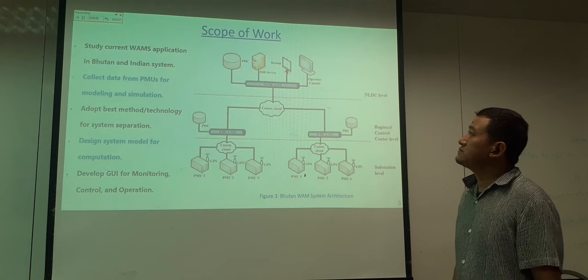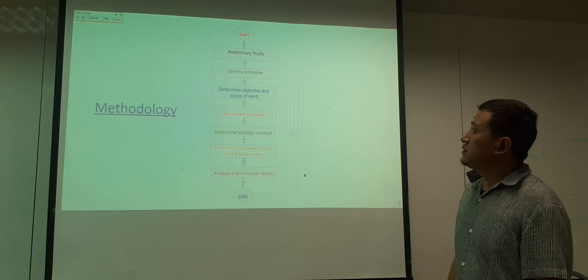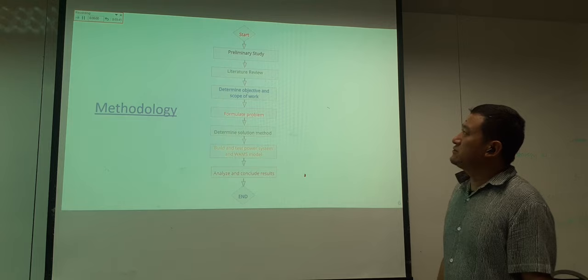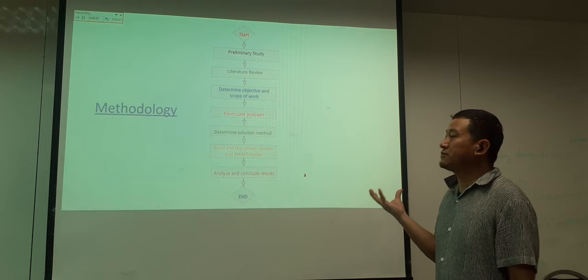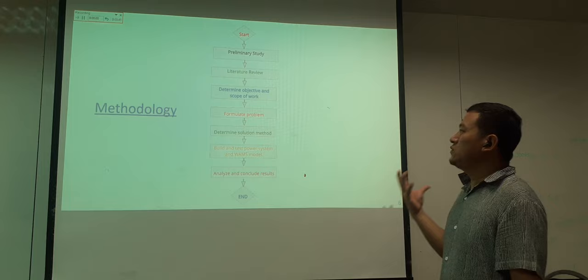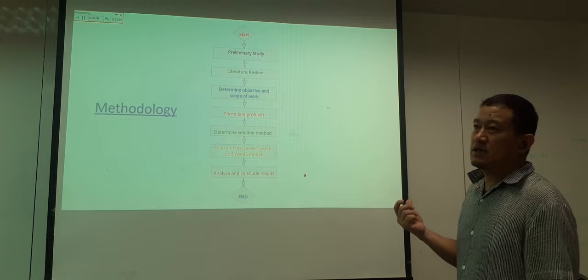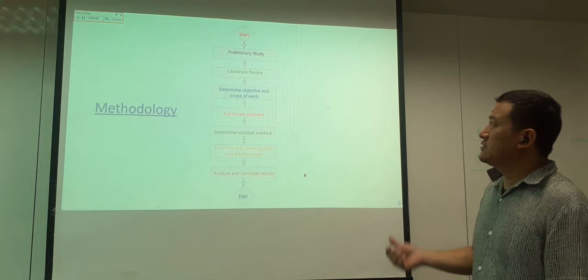The methodology adopted for this research is that, primarily, we will begin with some preliminary studies followed by a literature review. After determining the objective and scope of the work, we will formulate the problem and determine the best solution method. We will then build models for both our power system and WAMS and test them. After testing, we will analyze the results and validate our code.